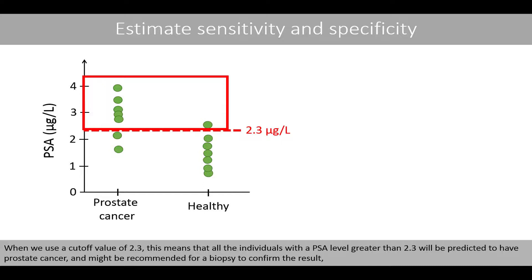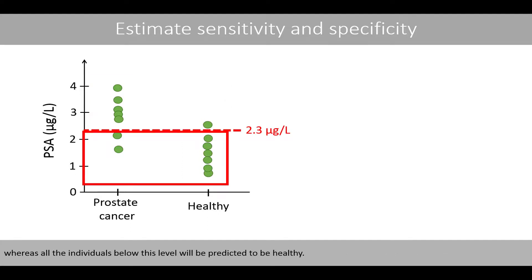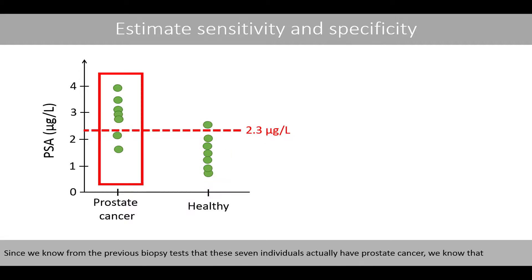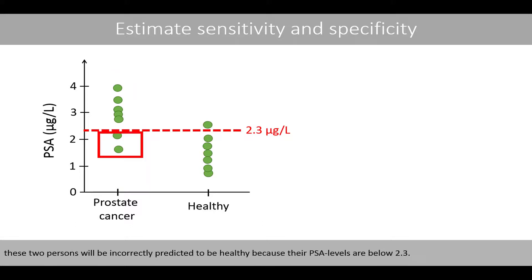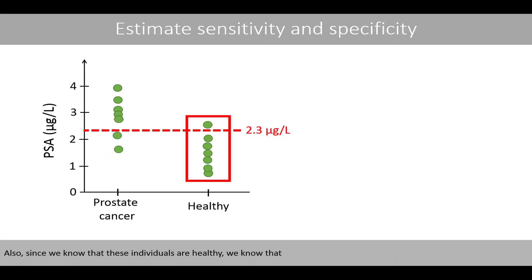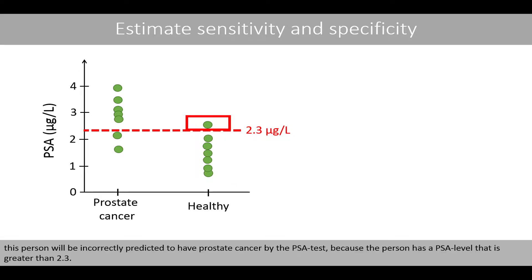When we use a cutoff value of 2.3, this means that all individuals with a PSA level greater than 2.3 will be predicted to have prostate cancer and might be recommended for a biopsy to confirm the result, whereas all individuals below this level will be predicted to be healthy. Since we know from previous biopsy tests that these seven individuals actually have prostate cancer, we know that two persons will be incorrectly predicted to be healthy because their PSA levels are below 2.3. Also, since we know that these other individuals are healthy, one person will be incorrectly predicted to have prostate cancer because their PSA level is greater than 2.3.